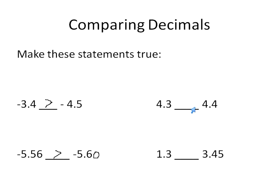Now over in positive numbers, these ones are easier. 4.3, 4.4, oh that's easy. 4.3 is definitely less than 4.4. Those ones we're used to dealing with a lot. 1.3 and 3.45, that one's really easy. 1.3 is much farther. 1 is less than 3, so we can definitely say 1.3 is less than 3.45.